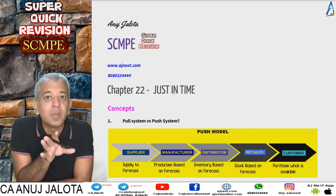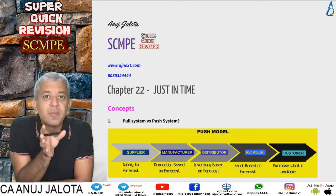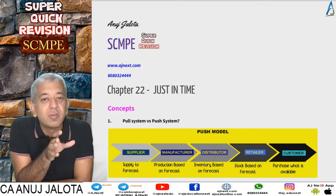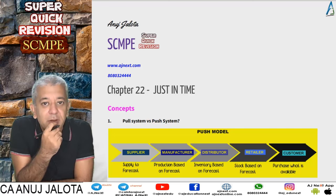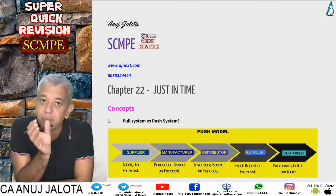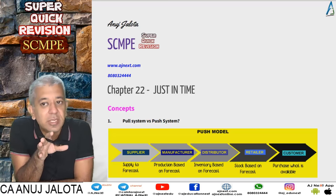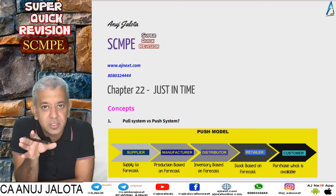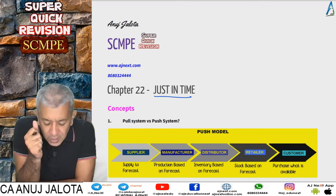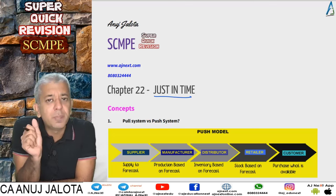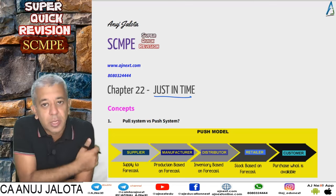If you want to implement JIT, it is very necessary that you implement TPM. TPM helps you avoid wastages in terms of time loss due to unscheduled stoppages. We also did a chapter called Cellular Manufacturing, which helps you avoid wastages in the form of time and motion — materials and workers move less if you organize your machines properly. Both TPM and Cellular Manufacturing are part of a concept called a Lean System. Lean systems are basically there to avoid wastages and bring out the efficiency of the organization.